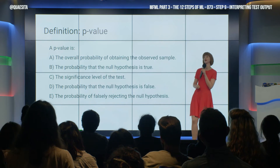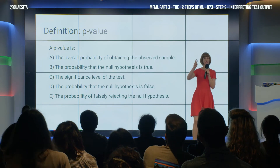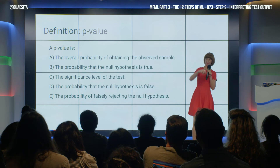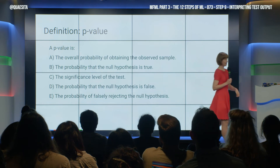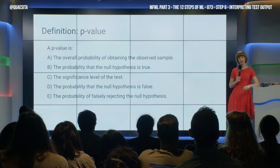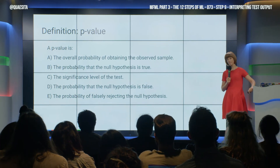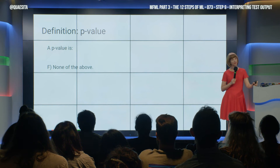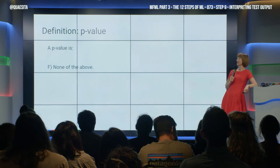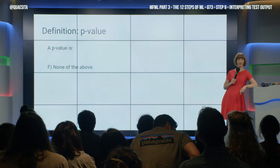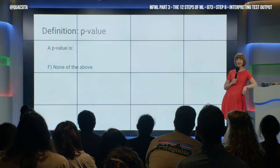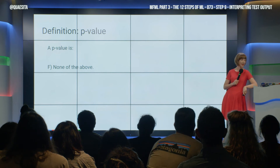On the count of three, everybody go. One, two, three. C. And the answer is... F. None of the above. Why didn't I hear any Fs shouted at me?